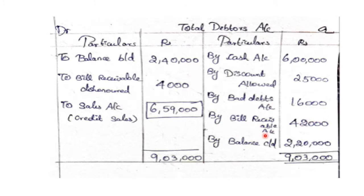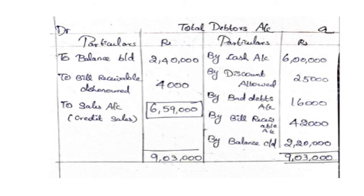By bills receivable account: $42,000. By balance carried down — closing balance $2,20,000. So the credit side totals: $6,000 plus $25,000 plus $16,000 plus $42,000 plus $2,20,000 equals $3,09,000. Therefore credit sales figure is $6,59,000 minus $2,44,000, giving the balancing credit sales amount.